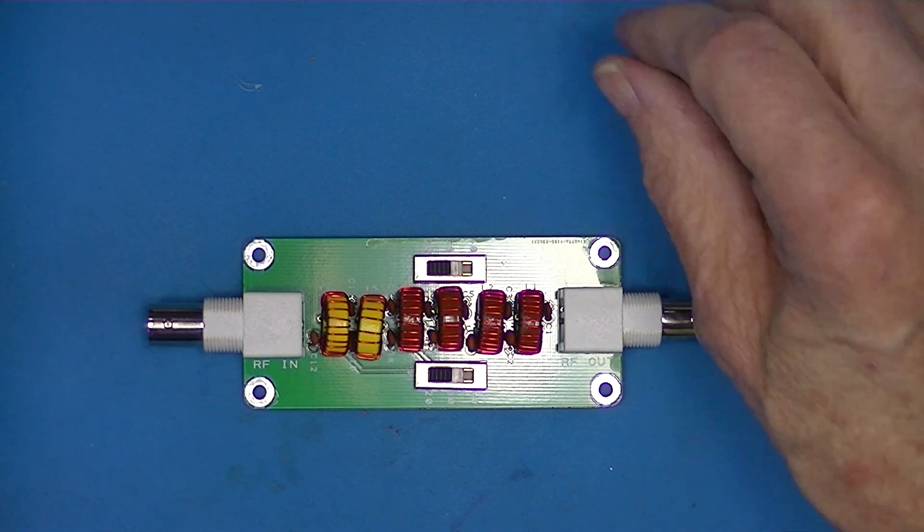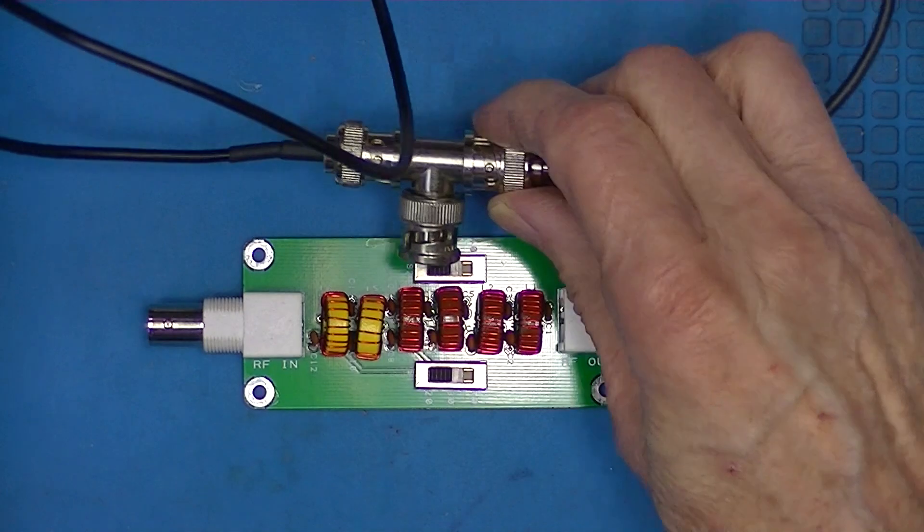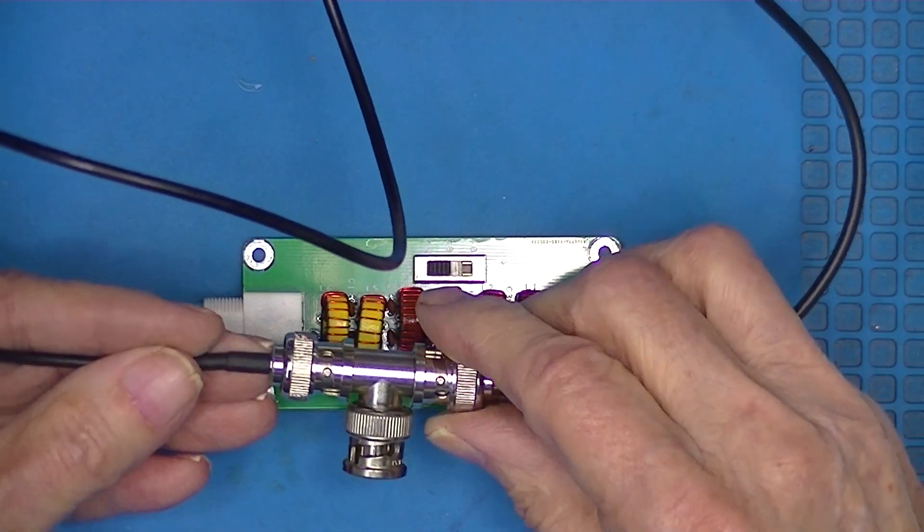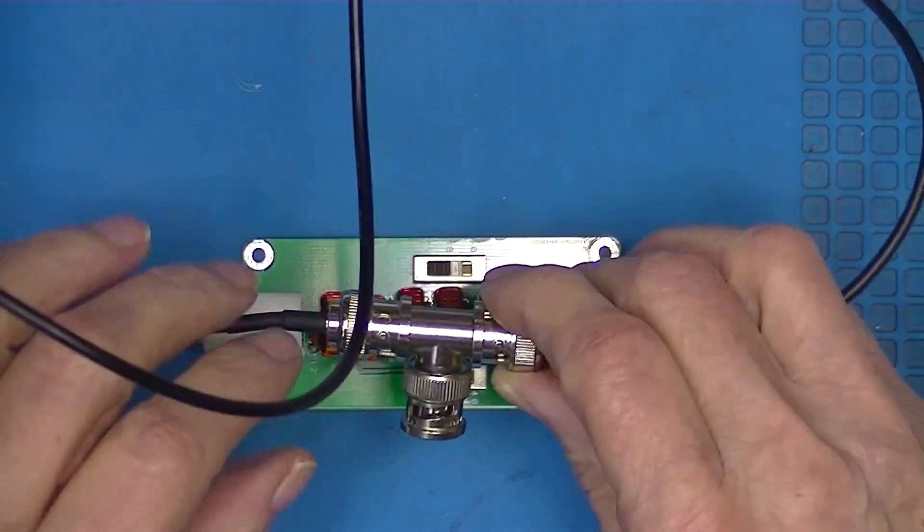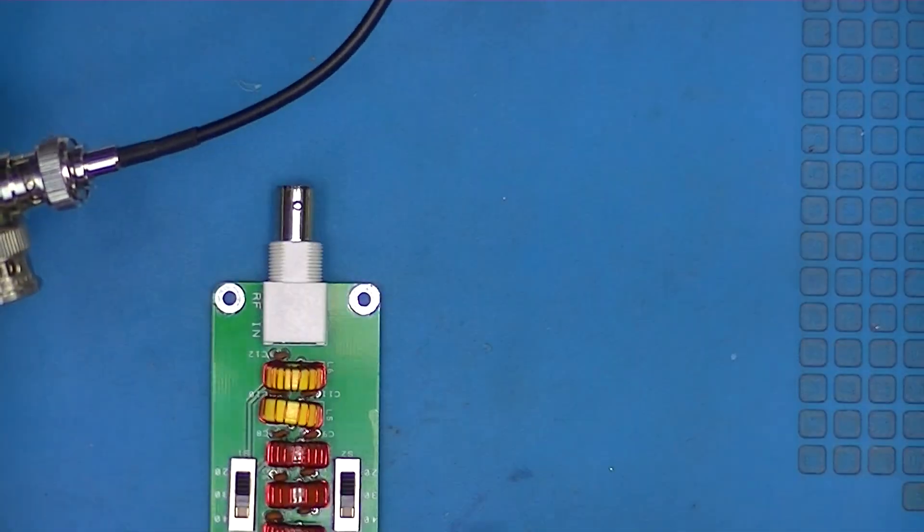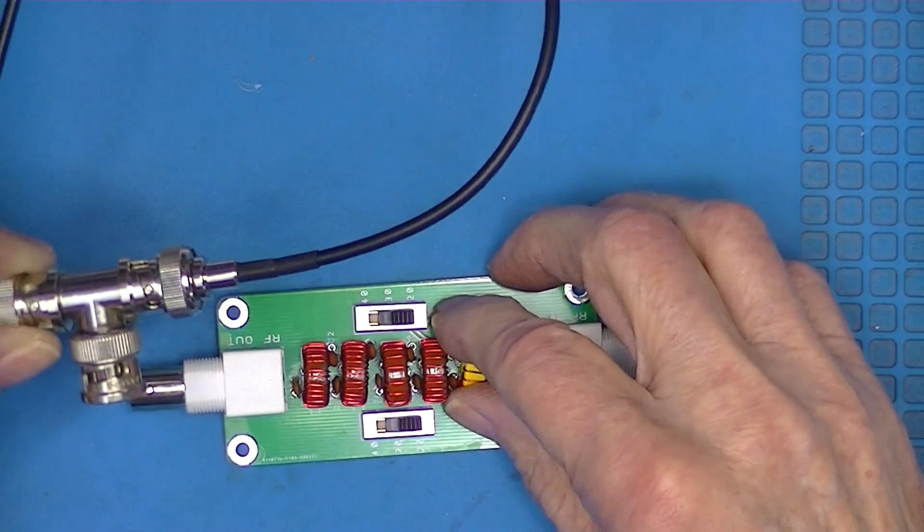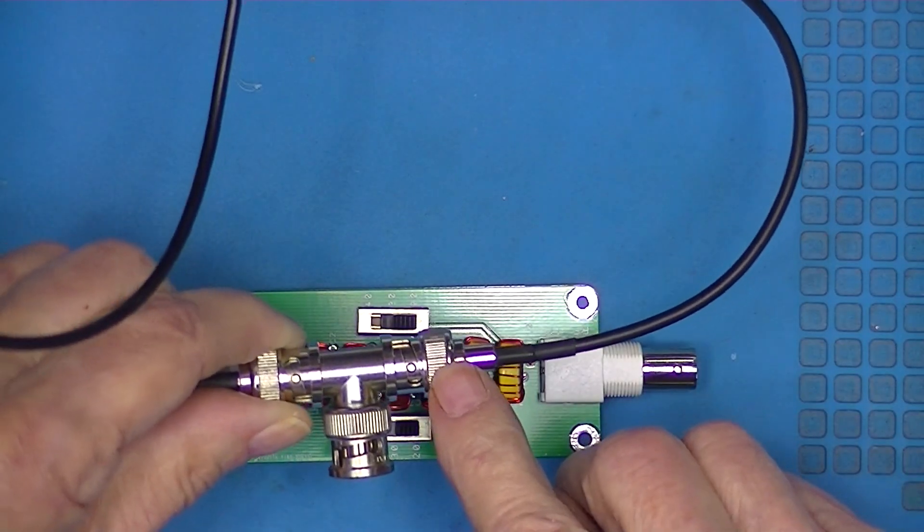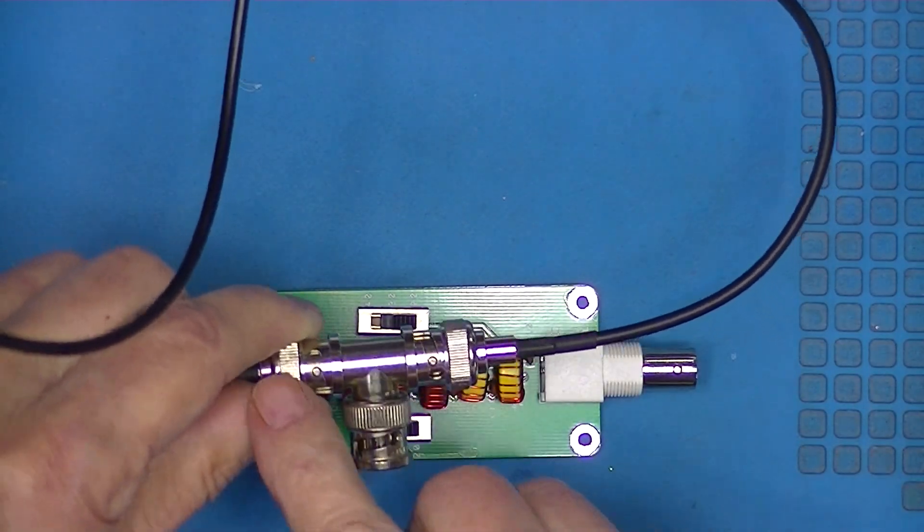First thing I should note: I've connected the output from the spectrum analyzer here, so I'll switch this around. The input to the spectrum analyzer here. In other words, this is a tracking generator and this is the input to spectrum analyzer.